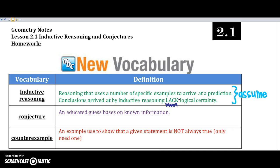A conjecture is something that you've probably heard before. It's just an educated guess. We use that a lot in science. So it's an educated guess based on known information.